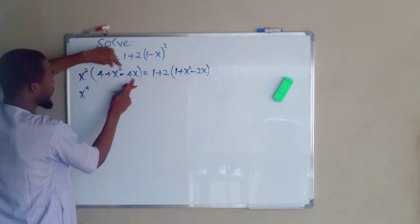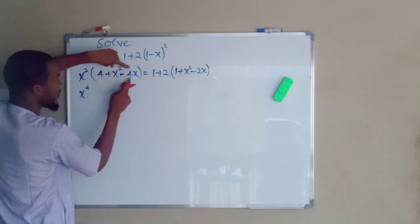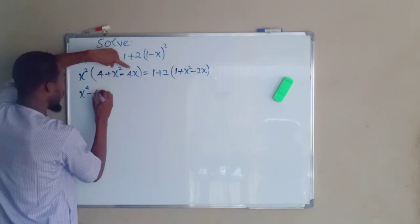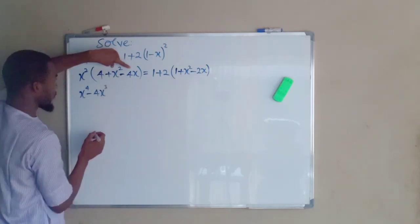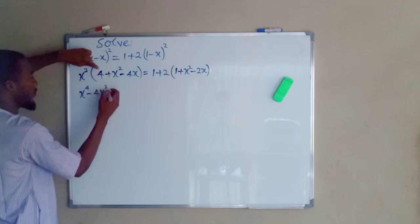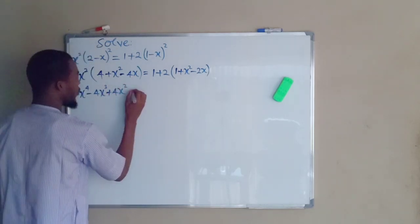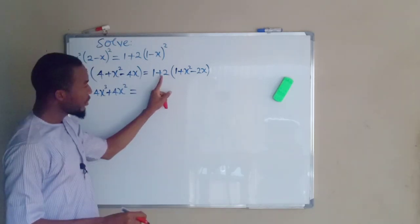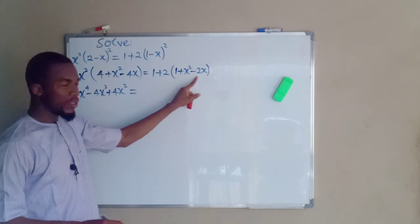Then x squared times negative 4x is going to give us negative 4x to the power of 3. Then x squared times 4 is going to give us 4x to the power of 2. Now we move to the right hand side and distribute 2 throughout all the other terms in the bracket.